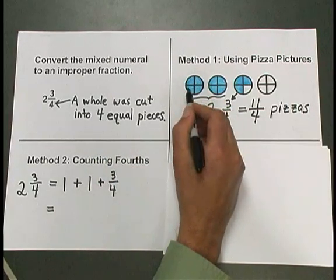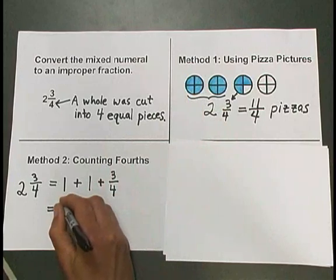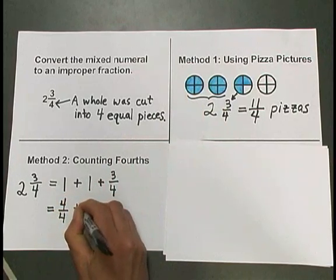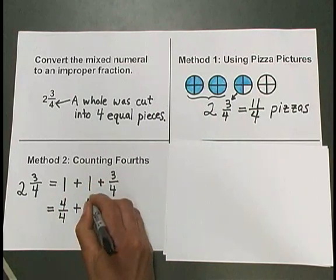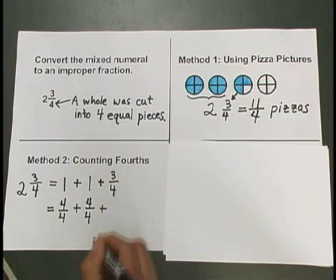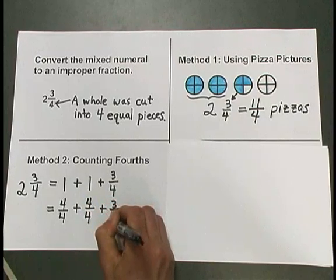The 1 whole here is like 1 whole pizza. We've cut it into 1, 2, 3, 4 fourths. So I'll write 4 fourths. Plus another whole, we can write as 4 fourths more. Plus we have our 3 fourths on the end.